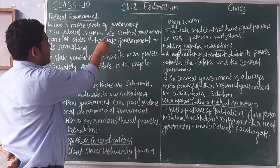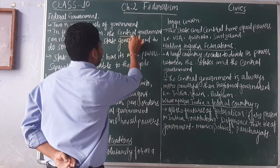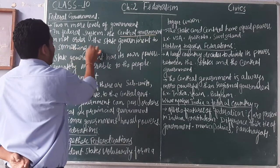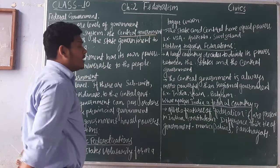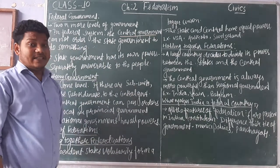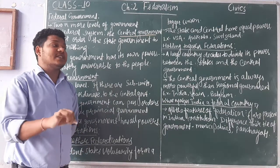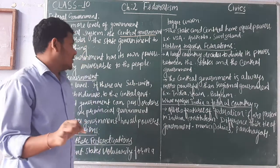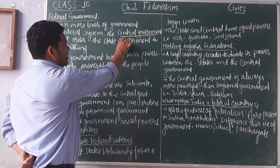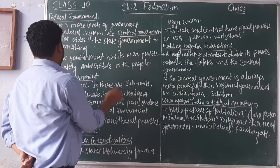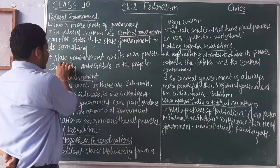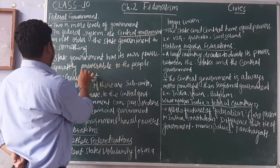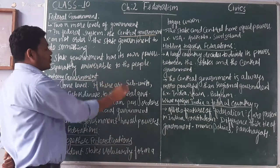In a federal system, the central government cannot order the state government to do something. The central government has its own area to function, whereas the state government has its own region to function. Nobody can order each other to function according to them. A state government has its own power and they are separately suited to the people.